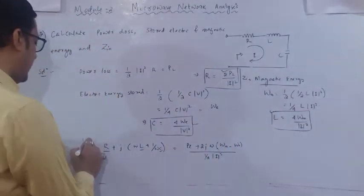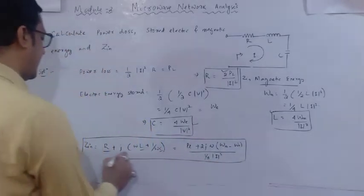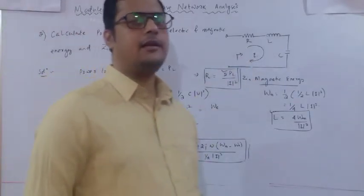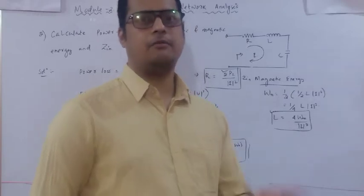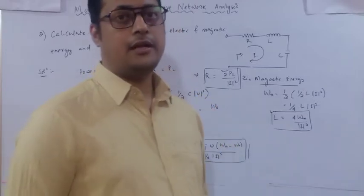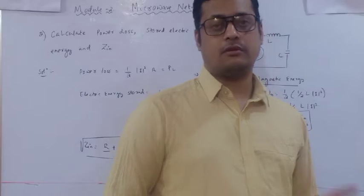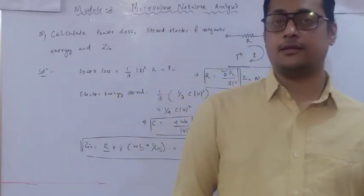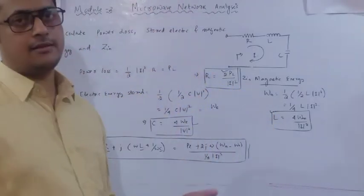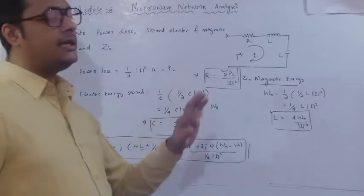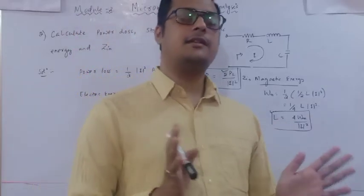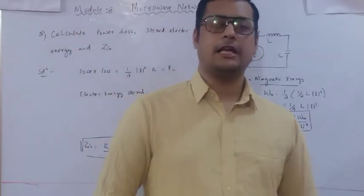This formula gives input impedance represented in terms of losses for the series RLC circuit. The questions may also come in terms of a parallel circuit - in that case, you need to reconsider how to compute R, L, and C values. For a parallel connection, it is easier to calculate admittance first, then convert to impedance.